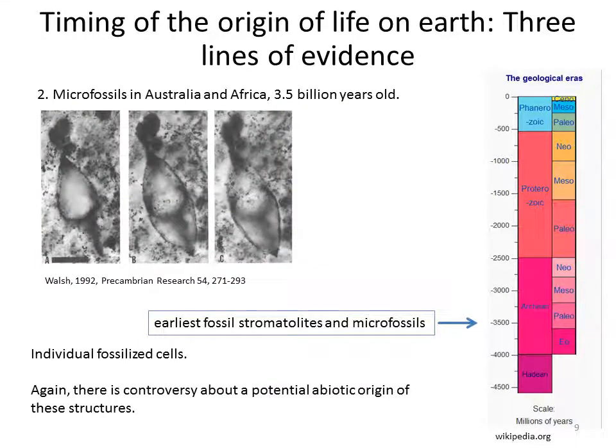The second line of evidence is another kind of fossils, so-called microfossils. These microfossils represent what is believed to be individual fossilized cells. The oldest such microfossils were found in Australia and Africa and were dated to be 3.5 billion years old.